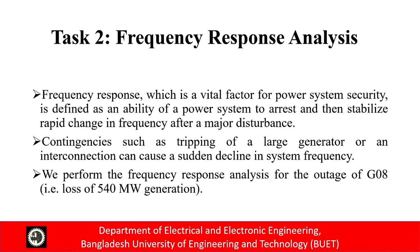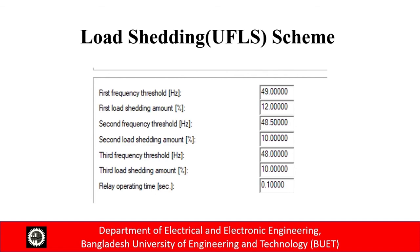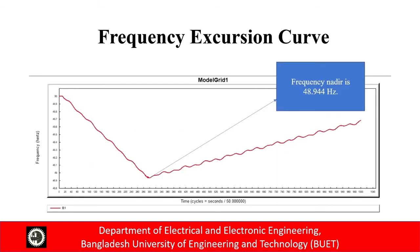Our Task 2 was to find the frequency response of the system. Frequency response is a vital factor for power system security, defined as the ability of a power system to arrest and then stabilize rapid changes in frequency after a major disturbance. Contingencies such as tripping of a large generator or an interconnection can cause a sudden decline in system frequency. We performed the frequency response analysis for the outage of generator 8. Here is the load shedding scheme and the frequency excursion curve. We can see the frequency nadir is 48.944 Hz.